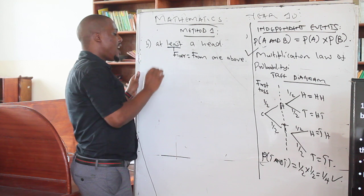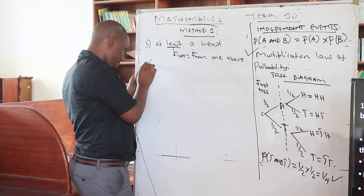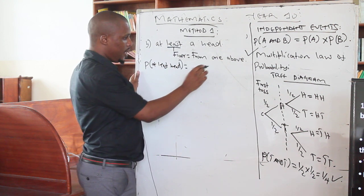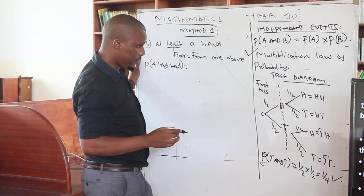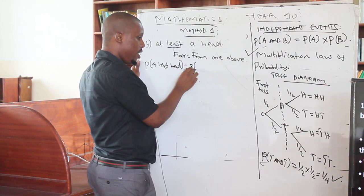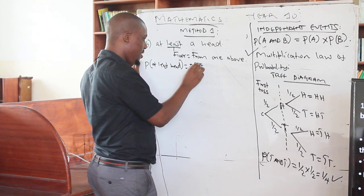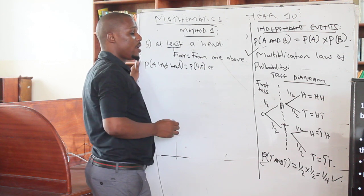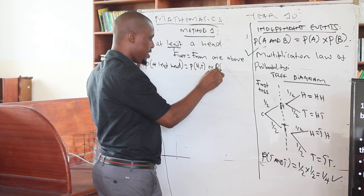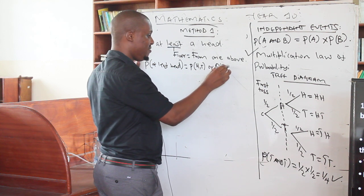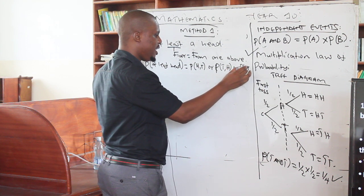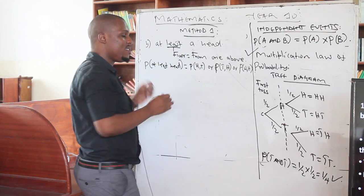So if I say what is the probability of getting at least one head, this means one head and above — from one and above. This can occur when you get a head in the first toss and a tail in the second toss, or a tail in the first toss and a head in the second toss, or a head in the first toss and a head in the second toss. Because 'at least' means one and above.